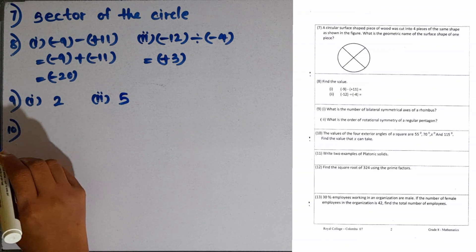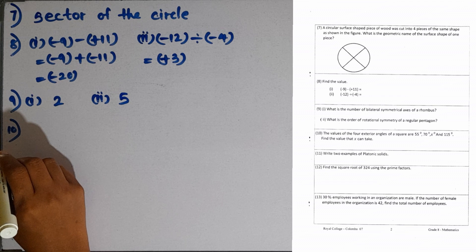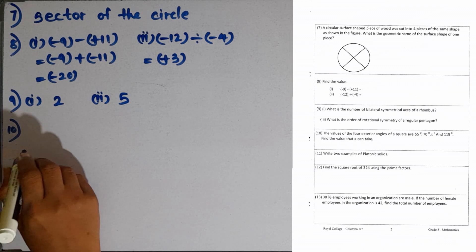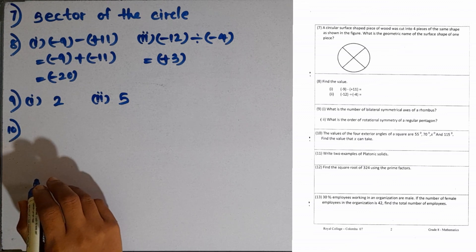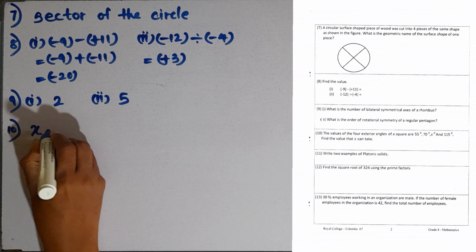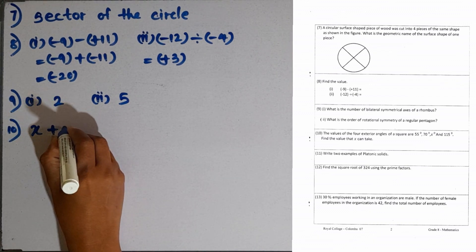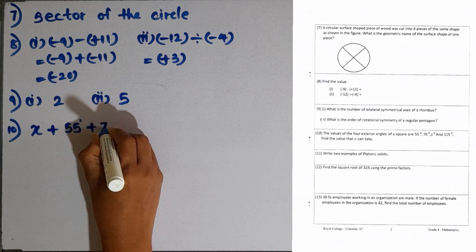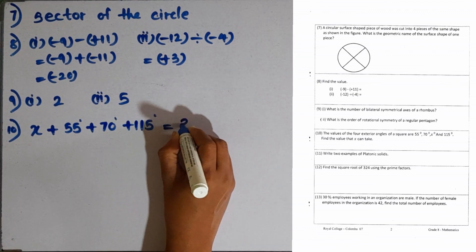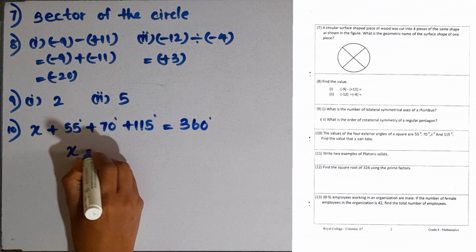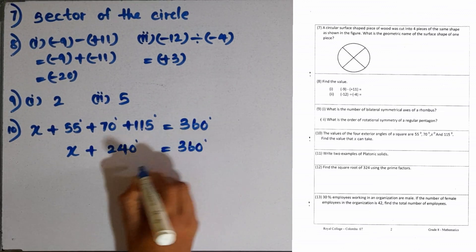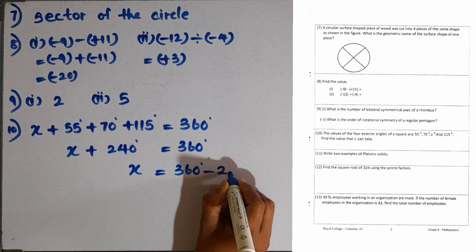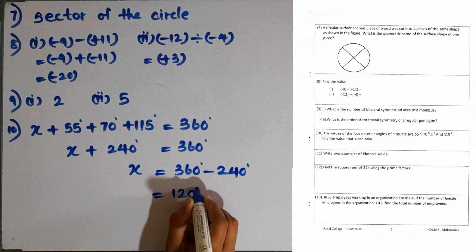Question number 10. The values of the 4 exterior angles of a square are 55 degrees, 70 degrees, x degrees and 115 degrees. Find the value that x can take. The sum of the 4 exterior angles is 360 degrees. So we write the equation: x plus 55 plus 70 plus 115 equals 360 degrees. x plus 240 equals 360 degrees, so x equals 360 minus 240. The value is 120 degrees.